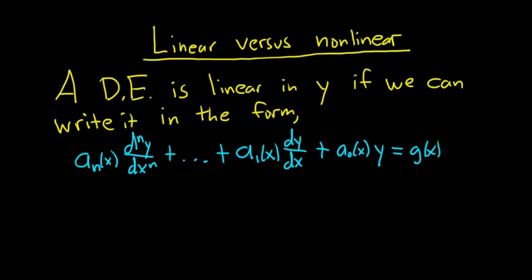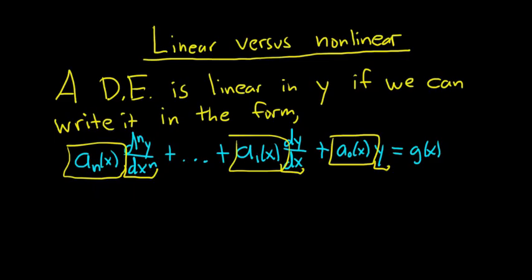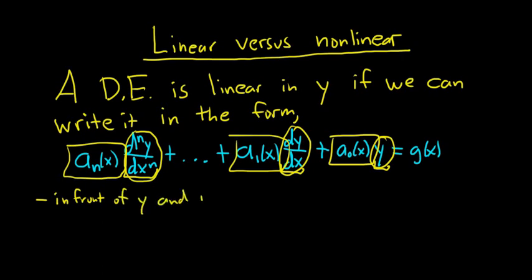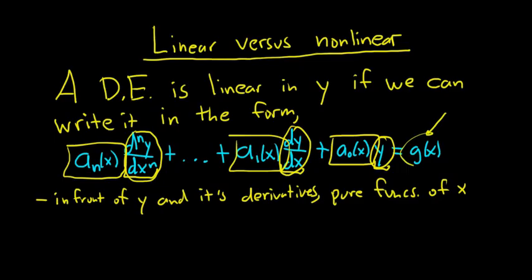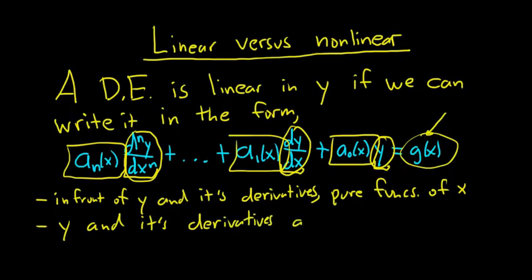So basically, in front of Y and all of its derivatives, you only have pure functions of x — that's the first condition. The second condition is that Y and all of its derivatives are all to the first power. Also, on the right-hand side you can only have x — you can't have a Y there.